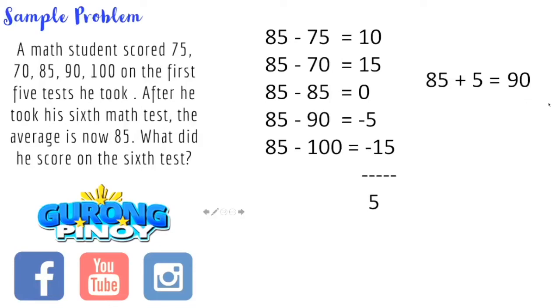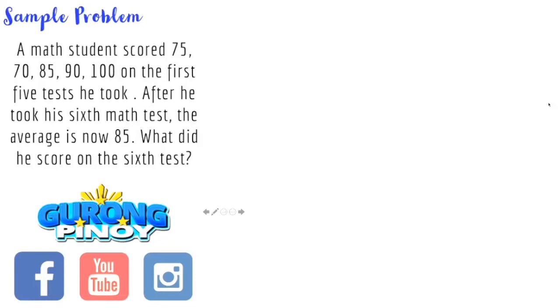Now if you'd want to check, we can still use the average formula that we had a while ago. So that's the sum of the terms divided by the number of terms. So again, our terms here, our numbers, the scores are 75, 70, 85, 90, and 100, which are actually given in our problem, plus 90. This is the answer we got from our math trick. So we add this all up. That would give us a sum of 510. Now after that, we divide 510 by the number of terms that we have. How many terms do we have here? That's 1, 2, 3, 4, 5, and 6. So that's 510 divided by 6.